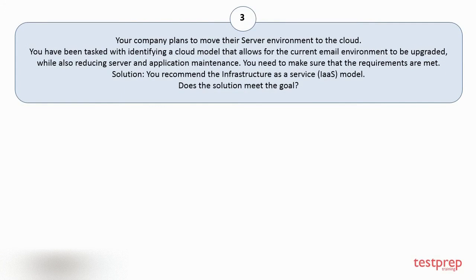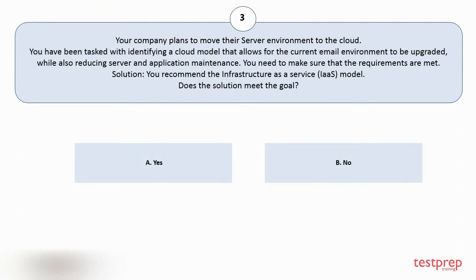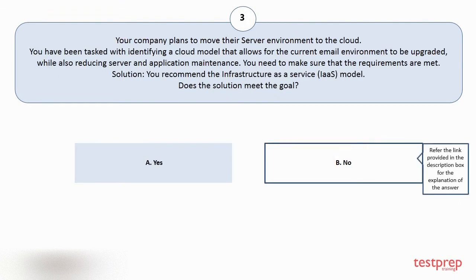Question number three. Your company plans to move their server environment to the cloud. You have been tasked with identifying a cloud model that allows for the current email environment to be upgraded while also reducing server and application maintenance. You need to make sure that the requirements are met. Solution: you recommend the infrastructure as a service model. The correct answer is option B.